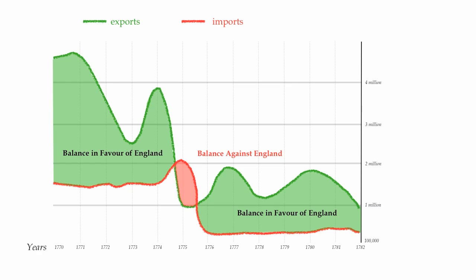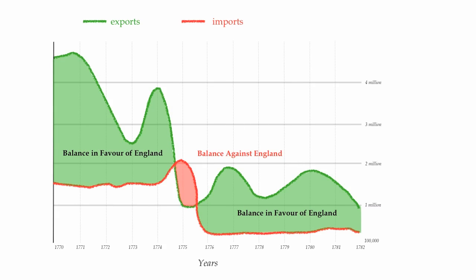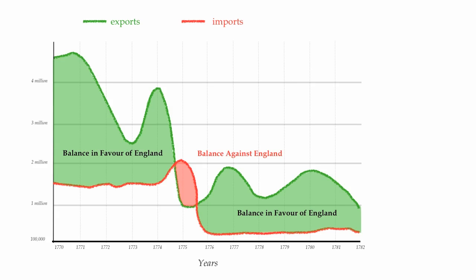Now I'm going to modernize this by putting the years at the bottom of the horizontal axis, shifting the vertical axis and its values over, and adding a dark horizontal baseline. I'll shift down the exports line and label it directly instead of using a legend, making it easier to read, and do the same with imports.